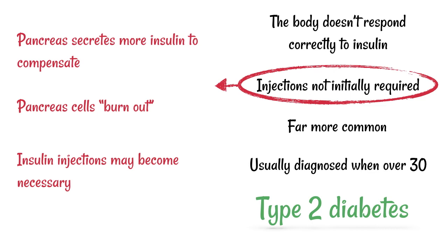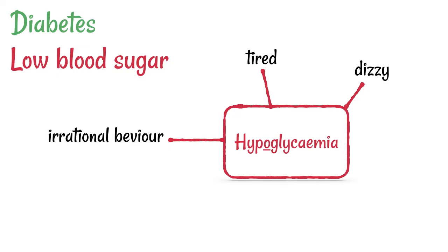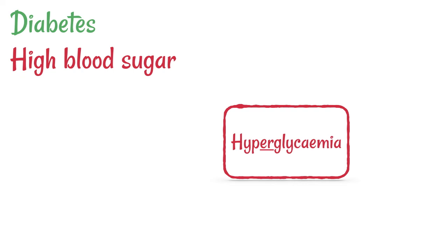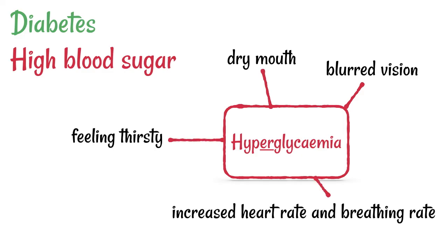A person with diabetes may go through phases of high or low blood sugar. Low blood sugar — hypoglycemia — can cause dizziness and tiredness because respiration isn't happening at the right rate. If it goes too far, it may result in irrational behavior or even unconsciousness. High blood sugar — hyperglycemia — can cause blurred vision, dry mouth, increased thirst, and an increase in heart rate and breathing rate.